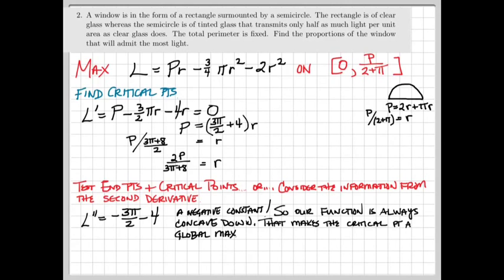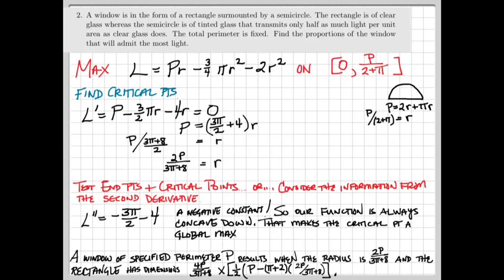To answer the question, we want to write down a final conclusion. Namely, the window of specified parameter P results in maximum light when the radius of the semicircle is 2P/(3π + 8). And the rectangle below it has dimensions 4P/(3π + 8) by 1/2 of (P - π + 2 times 2P/(3π + 8)).